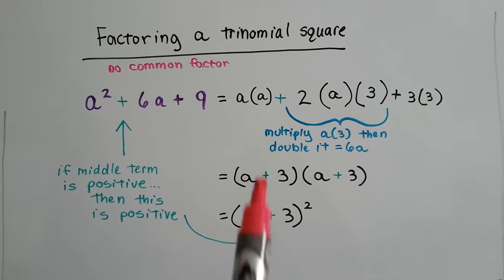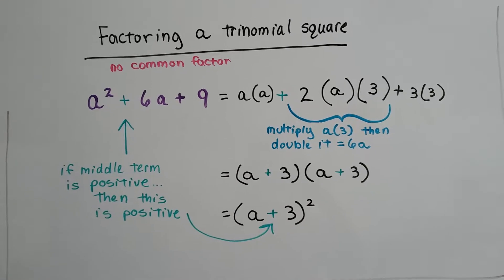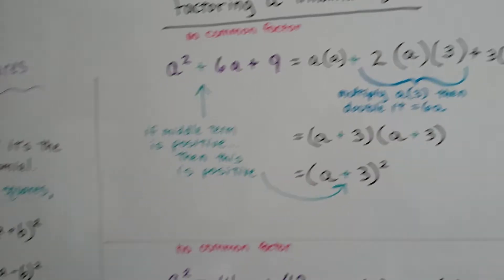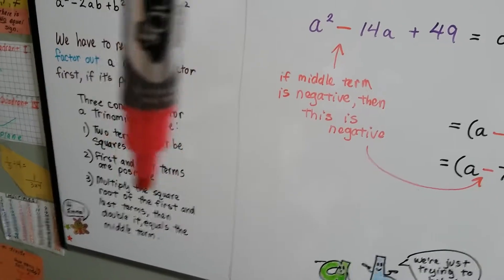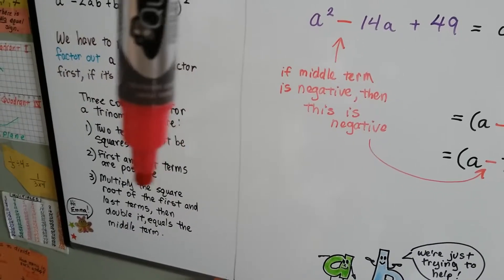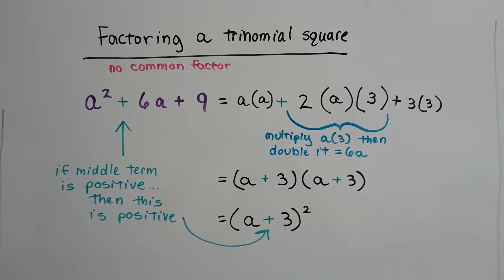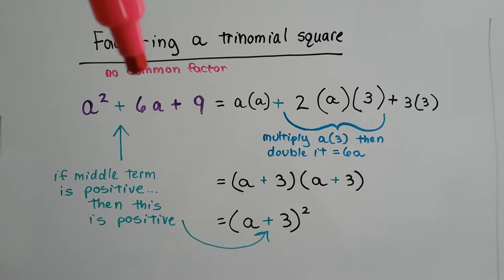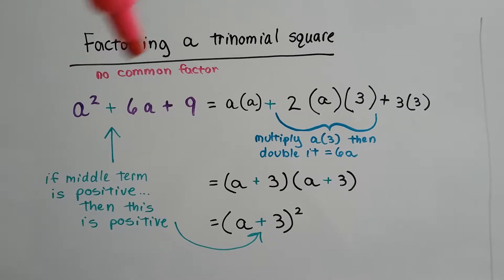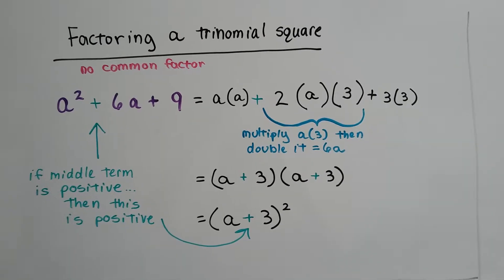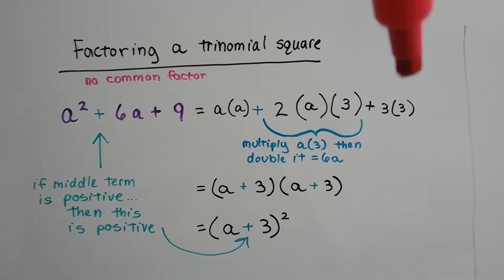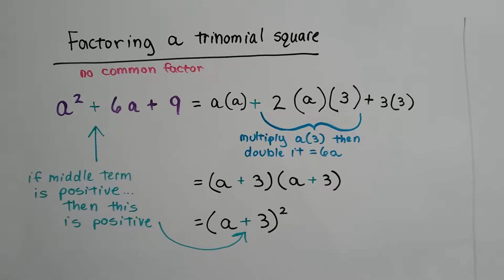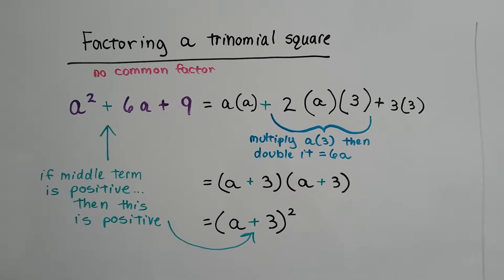So a² is a times a, right? And we know from our rule that if we multiply the square root of the first and last terms and then double it, it's going to equal the middle term. So we can do that in reverse. If we multiply a times this 3, because 3 times 3 is the 9, if we multiply a times 3 and double it, it'll give us this middle term.